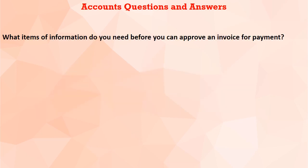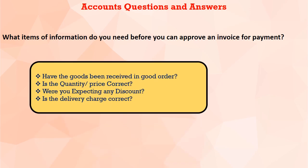What items of information do you need before you can approve an invoice for payment? First, have the goods been received in good order? Second, is the quantity and price correct? Third, are you expecting any discount? If there is a discount, we can approve the payment accordingly. Fourth, are delivery charges applicable? Because as per the company agreement, some companies charge for delivery and some do not. These four points must be confirmed before processing the payment.